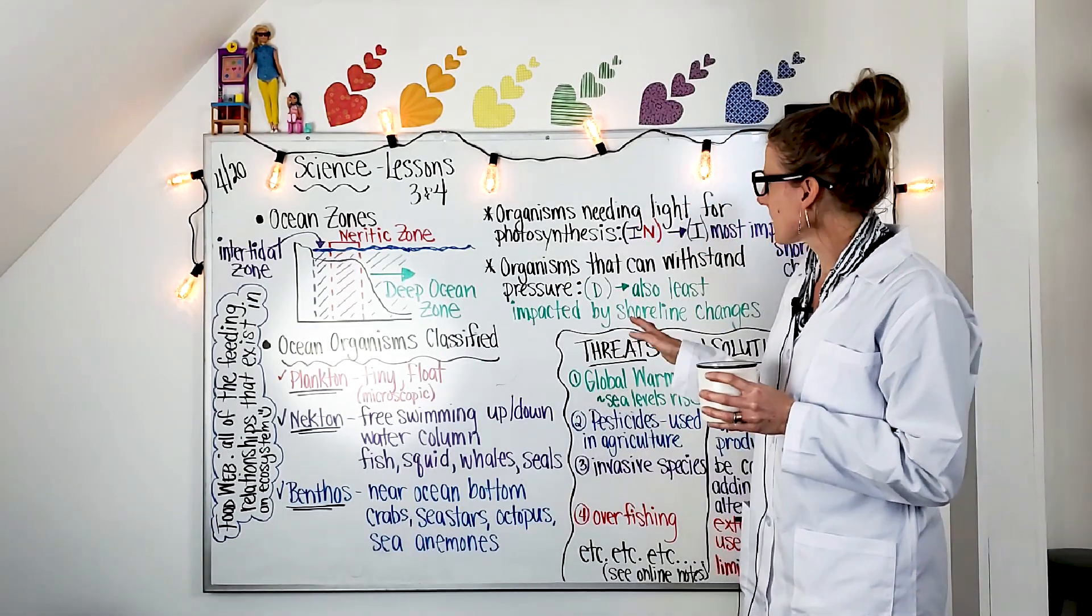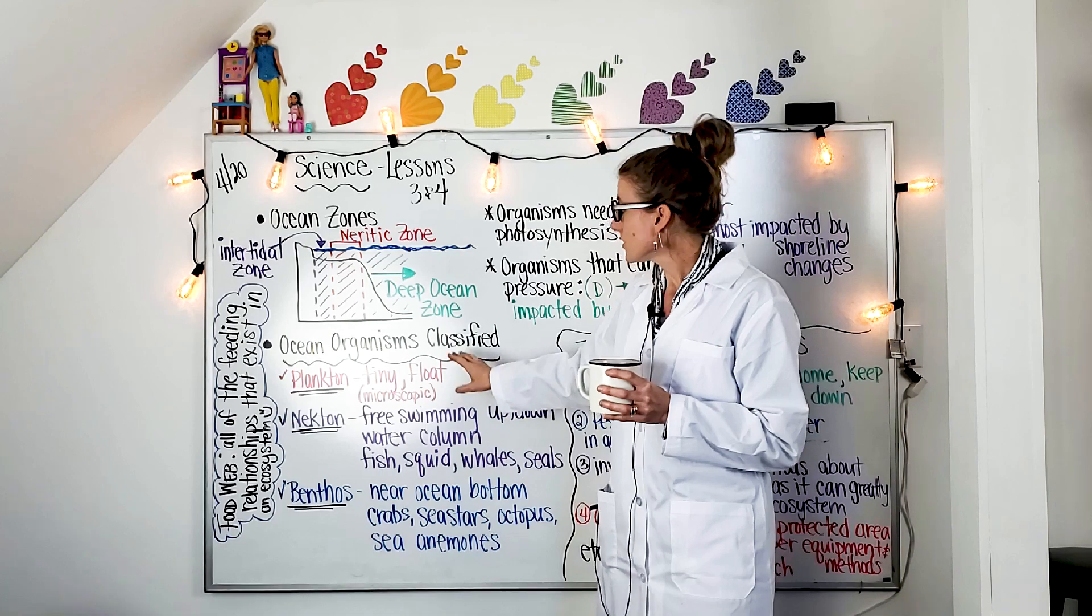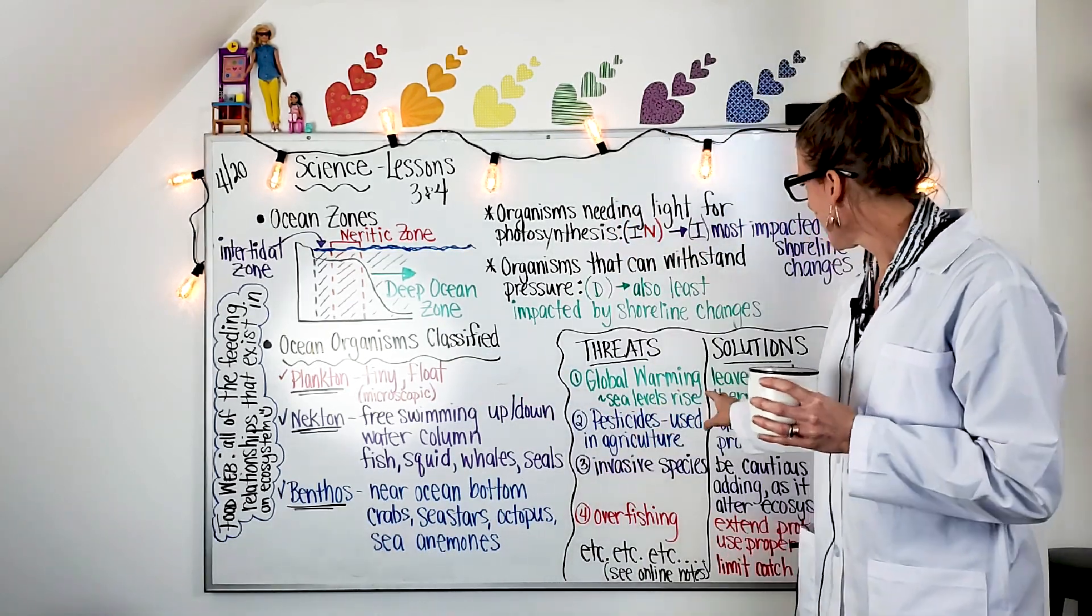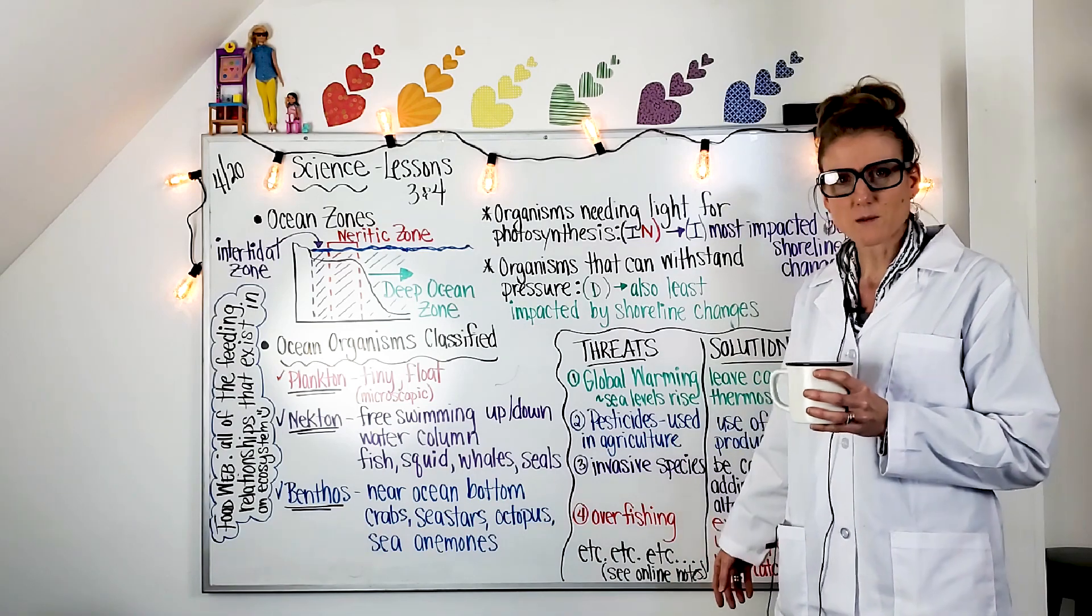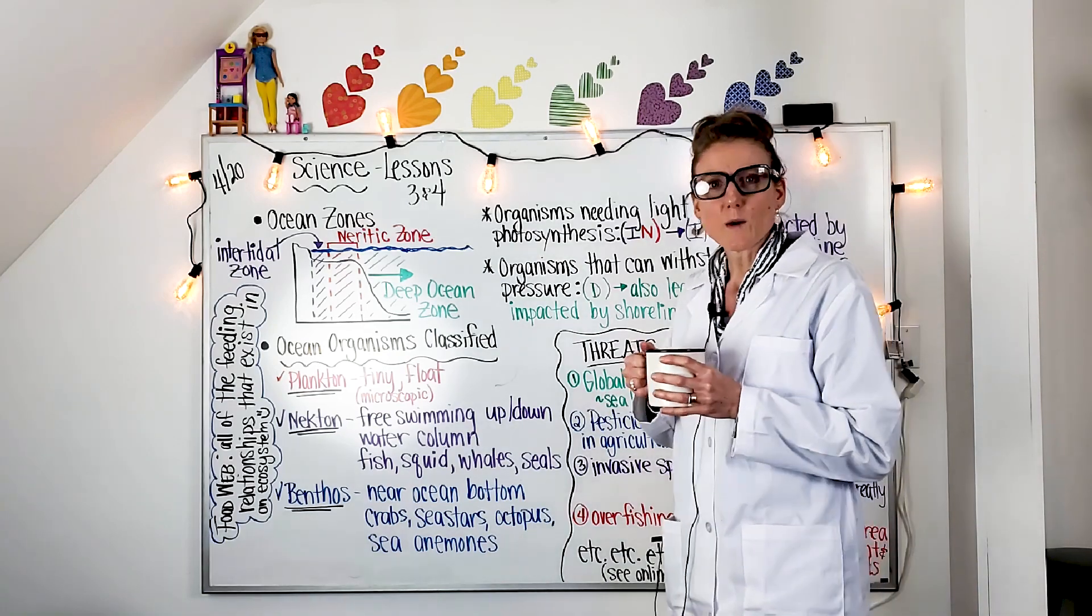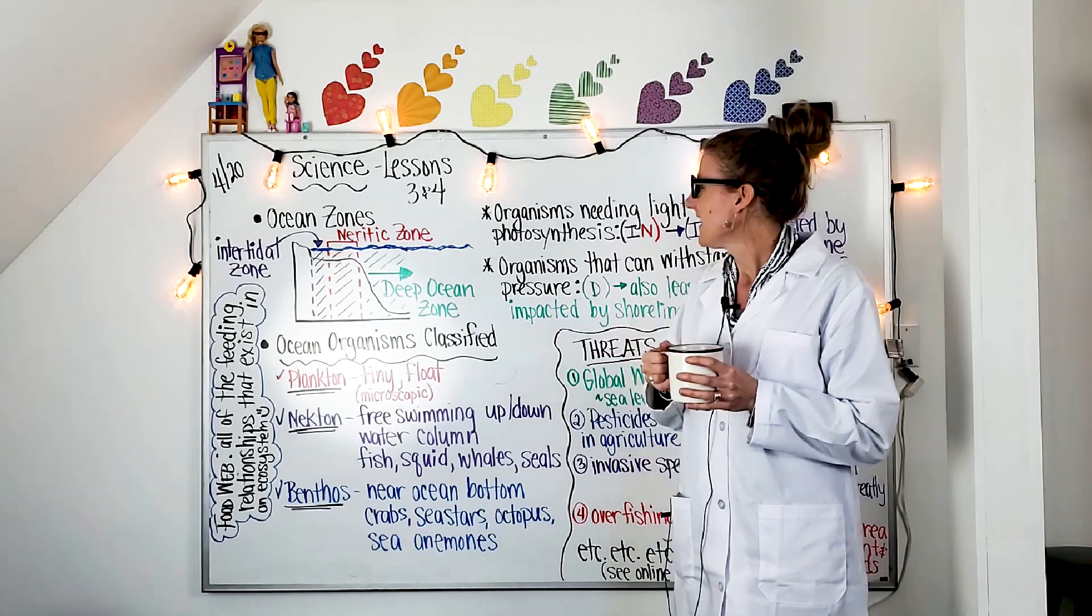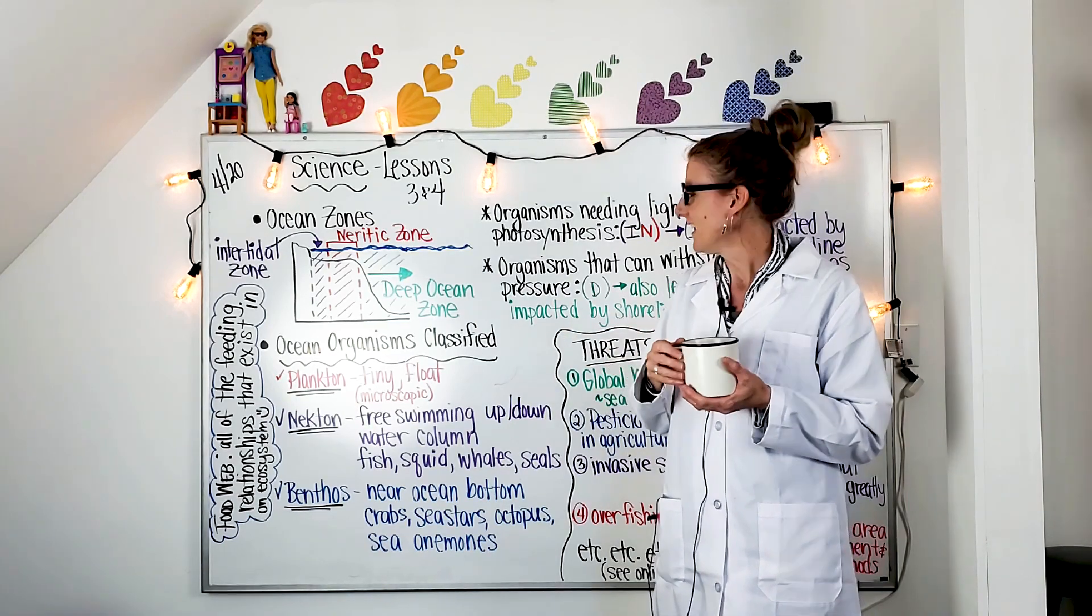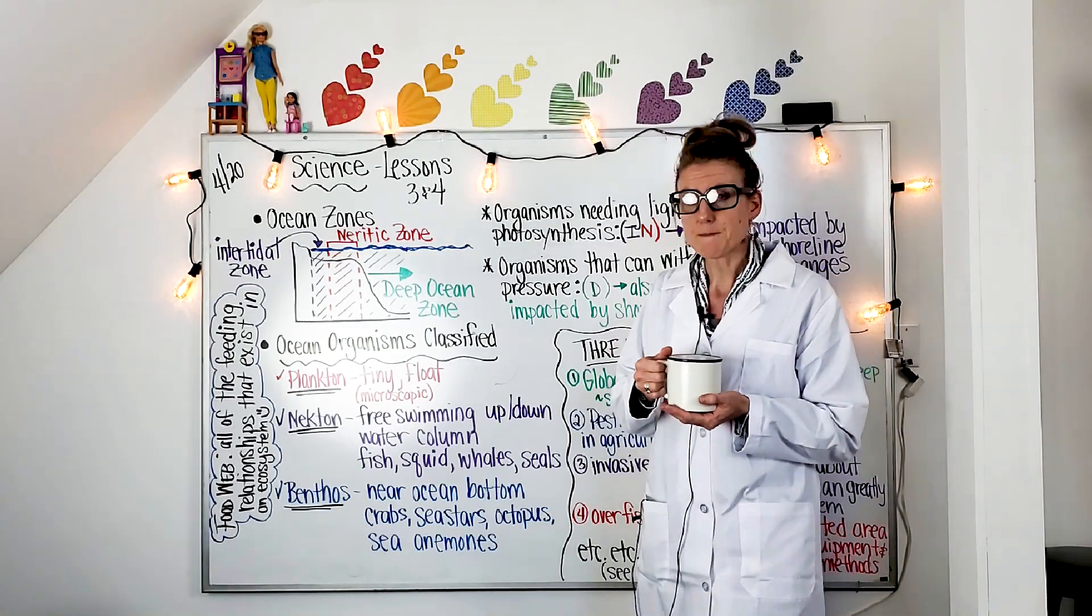So what we are going to talk about today are the ocean zones. I've got those bolded. The ocean organisms and how they're classified. And then we're going to talk over here about what's going on with the oceans, some of the threats that are happening now, and then some of the possible solutions. It was nice to see a lot of you guys on Zoom the other day. I really enjoyed that. So I'll do another one. We'll stick to Fridays at one o'clock. Keep passing questions my way. Don't forget to message. Anytime.